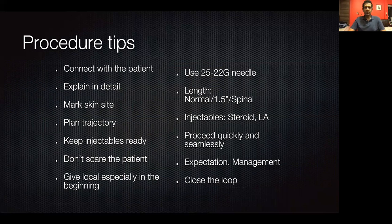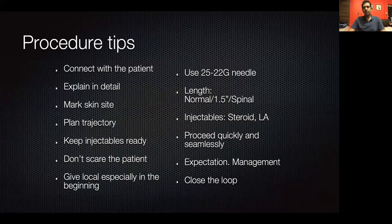When starting out, I encourage giving a fair amount of local anesthesia so you can work more freely and the patient doesn't twitch. I use a 25 to 22 gauge needle; a one-and-a-half inch needle is usually adequate, though sometimes you may need a spinal needle. Injectables typically are steroids and local anesthetic. Once things are planned properly, you can proceed quickly and seamlessly and procedures finish very fast — patients often say they didn't even realize it was done.